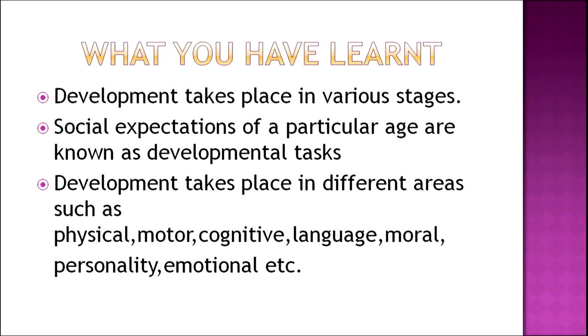This was all about the different aspects or areas of development. To summarize today's program: we started with development taking place in various stages; we talked about social expectations that come with a particular age, for example a child is expected to go to school and a father is expected to earn for the family. The different areas in which development takes place include physical development, motor development, cognitive development, language development, moral development, personality development, emotional development, and more. I hope the content of today's program is clear to you all. Thank you.